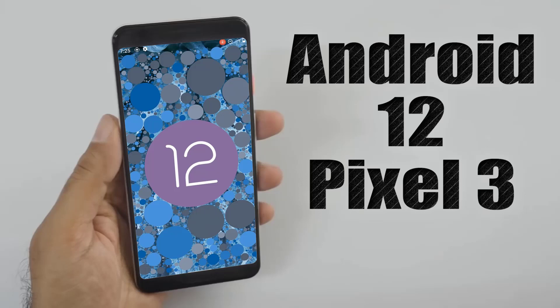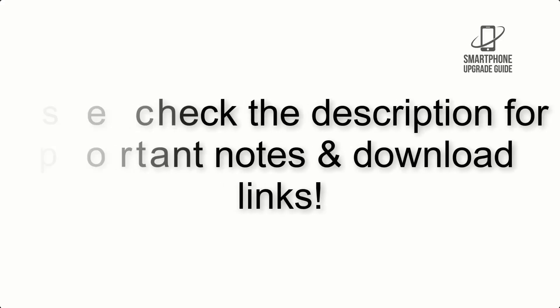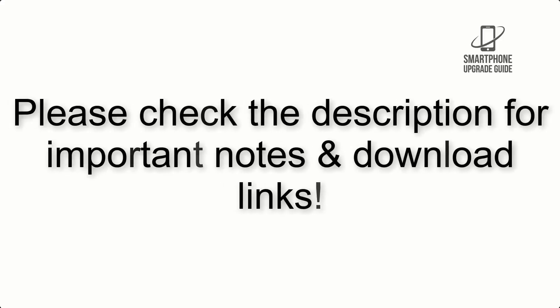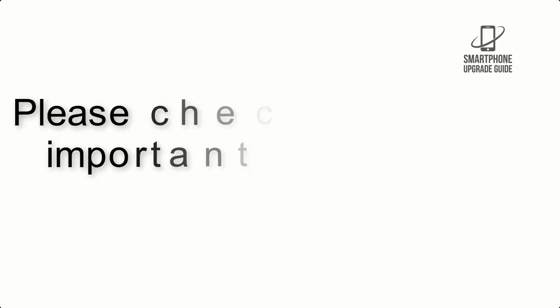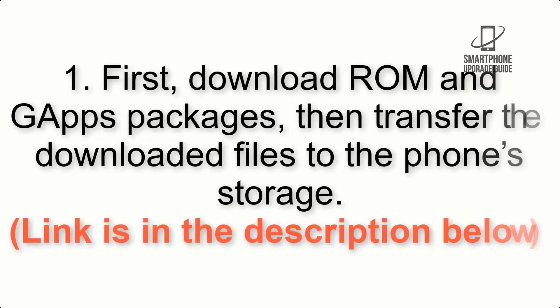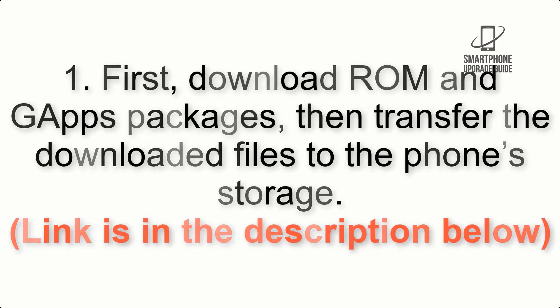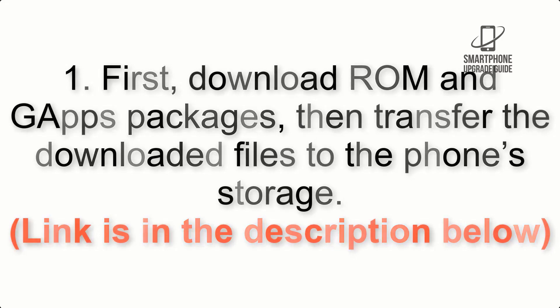Install Android 12 on Pixel 3 via LineageOS 19. Please check the description for important notes and all the download links. First, download the ROM and GApps packages, then transfer the downloaded files to the phone storage. The link is in the description below.